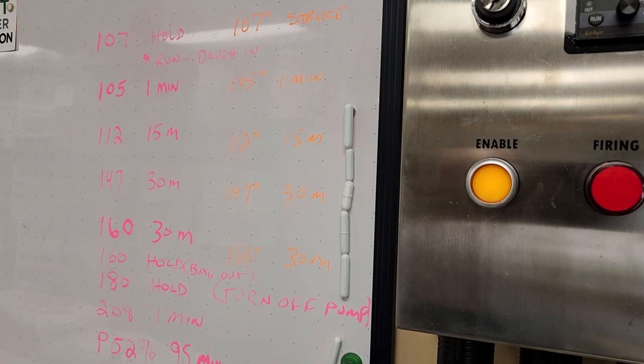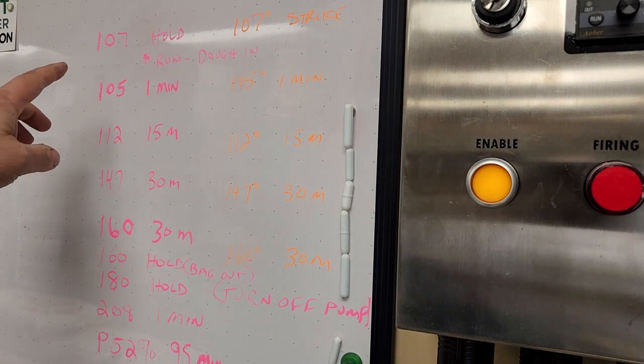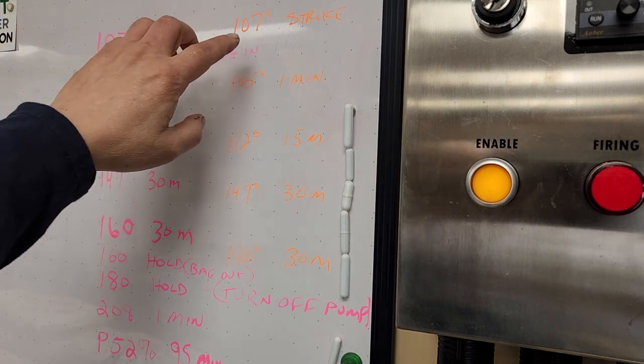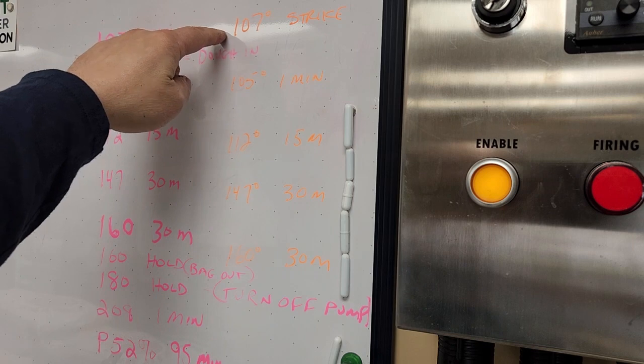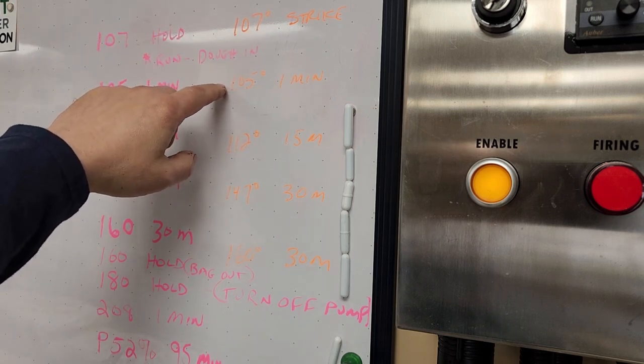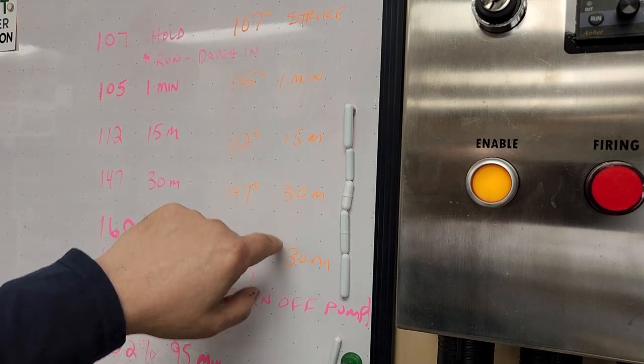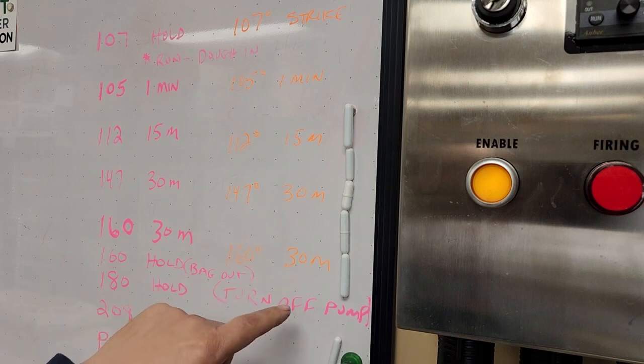This is a good example because today I'm doing a Dunkelweizen or a Dunkel's Weiss which is going to have a lot of different mash steps. The first thing that I do is write out my plan. I'm going to go 107 for the strike water, 105 for a quick acid rest, then as it ramps up to the protein rest for 15 minutes, 147 for 30 and 160 for 30.